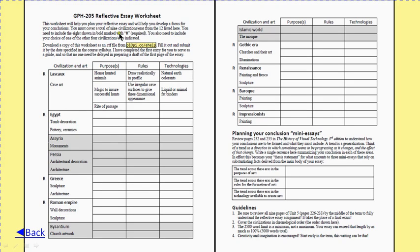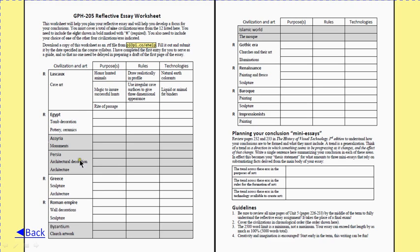In this essay you have to cover nine civilizations. Eight are required: Lascaux, Egypt, Greece, the Roman Empire, the Gothic era, Renaissance, the Baroque, and the Impressionists — taking this up to about 1900 — in chronological order. There's an additional one you choose from four options: Assyria, Persia, Byzantium, or the Islamic civilization. You choose one as the ninth, fitting it in chronologically. The reason for this choice is that various people in the class might have different backgrounds and may want to engage with something familiar.